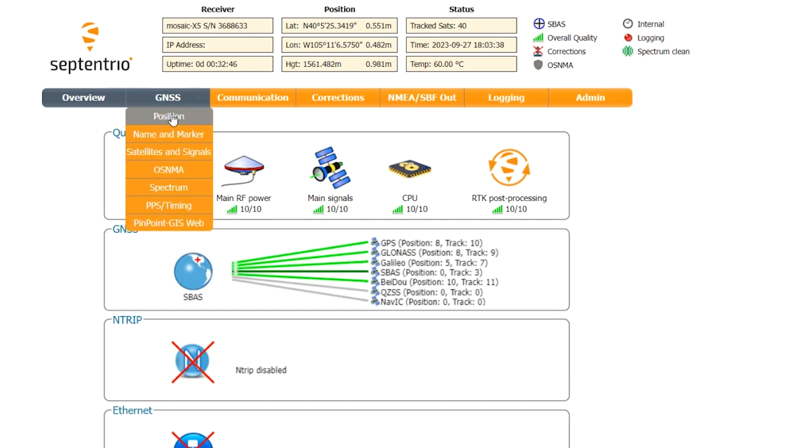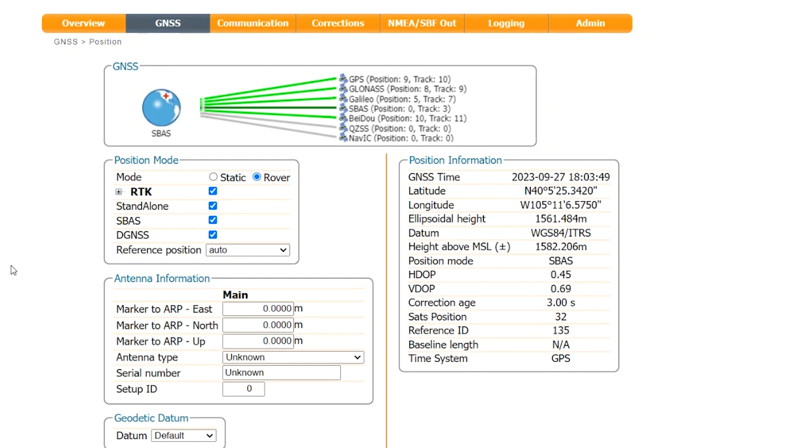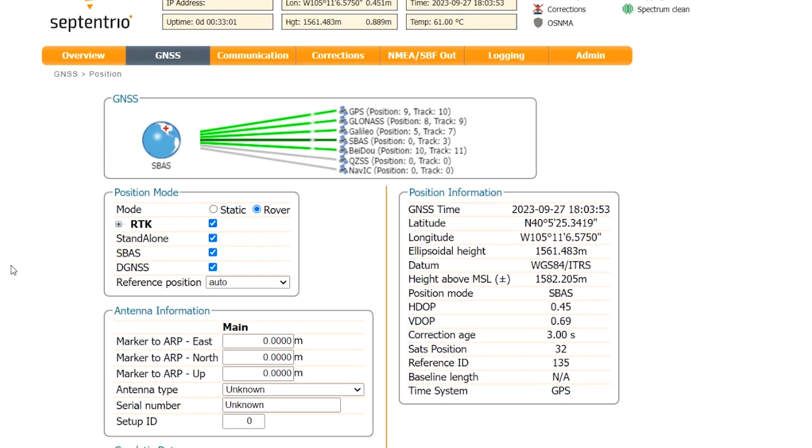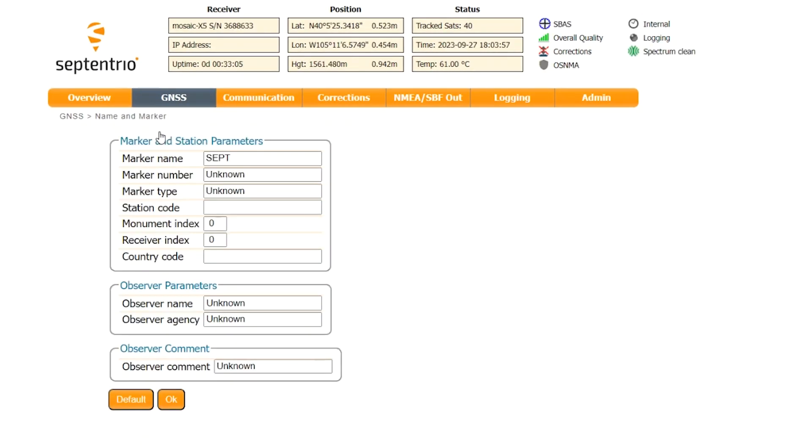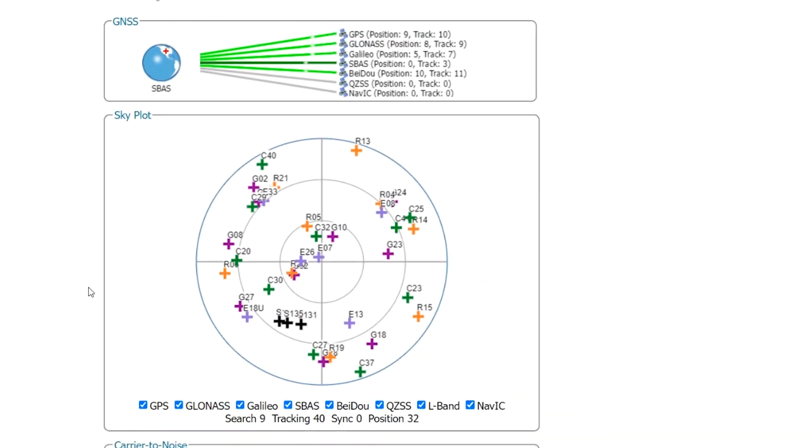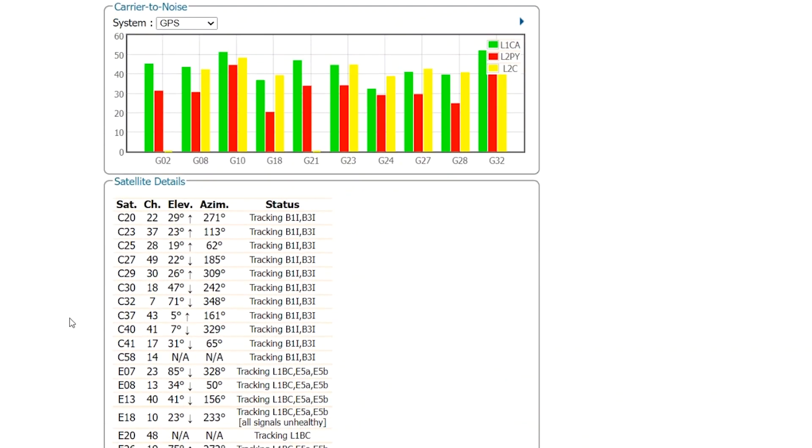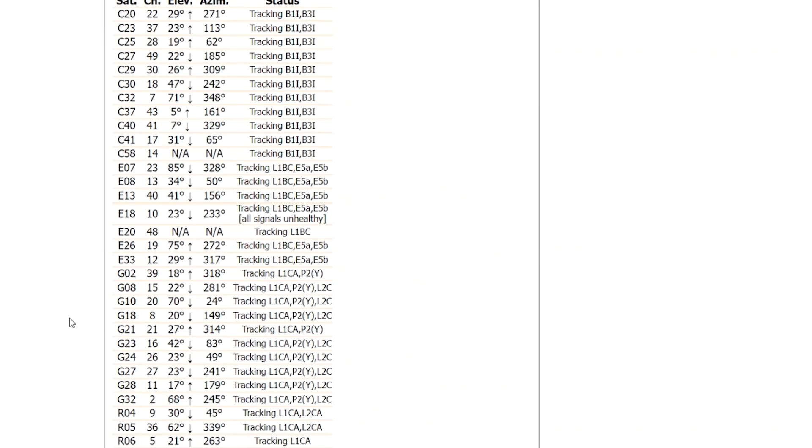Let's take a look at the GNSS page. You can see, once again, your position and satellites that you're seeing, as well as position mode, antenna info, extensive position info, even geodetic info. Now, if you follow the drop-down menu to satellites and signals, you can get a skyplot with the positions of all the satellites, plus carrier-to-noise info, and more advanced satellite details.